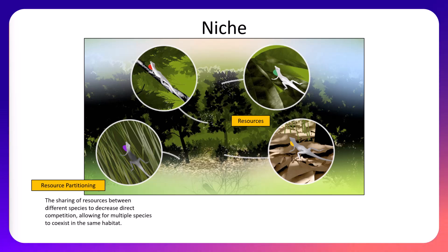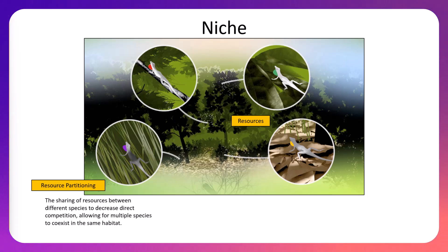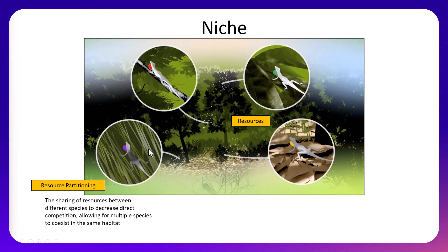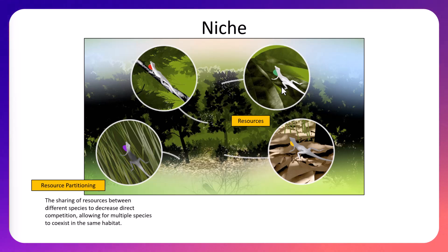Resource partitioning allows multiple species to exist in the same place at the same time by forming slightly different niches so they don't directly compete. If all four species of anole lizards were competing for the exact same food source, three would lose and one would become dominant. But by occupying different spaces in the tree and eating different food, they coexist. You can also notice differences in body structure — some have shorter legs — which relates to evolution and natural selection as a selective pressure.